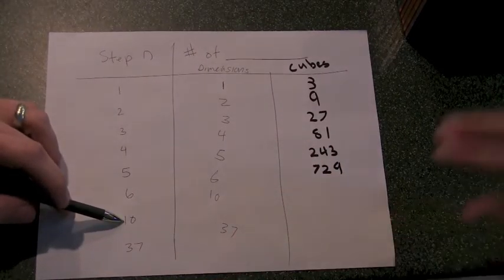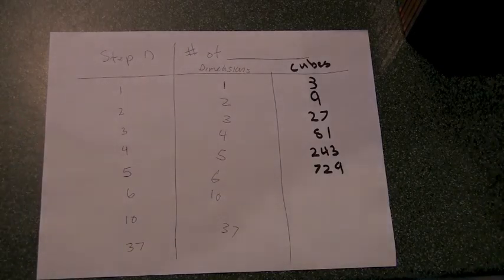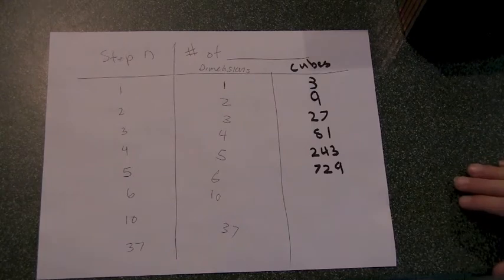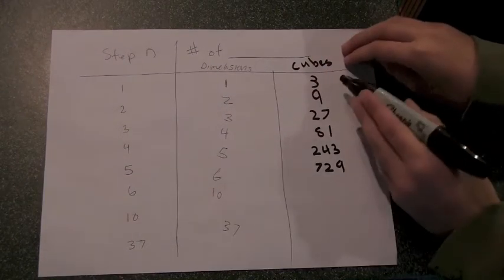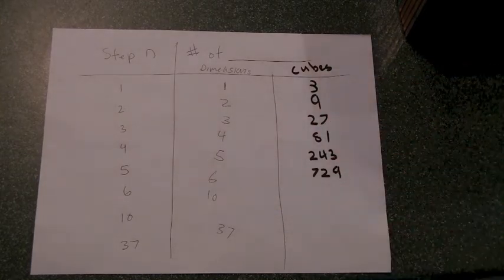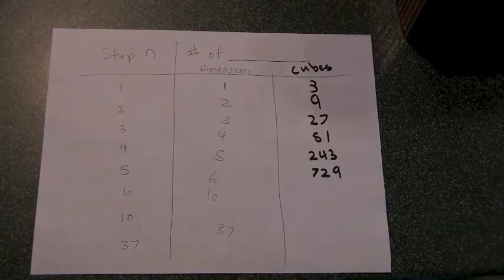Step ten? Step ten. Well, that's three times three to the ninth. Because you start with three and you're multiplying by three, three squared, three cubed, three to the fourth, three to the fifth. Alright. What is three to the ninth? It's also three, it's just three to the tenth.